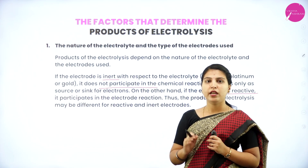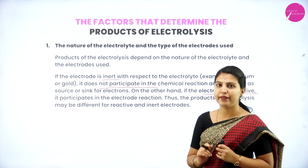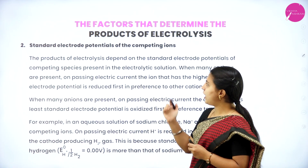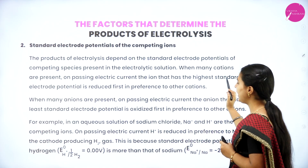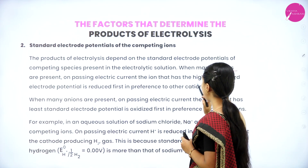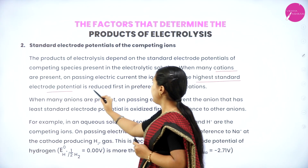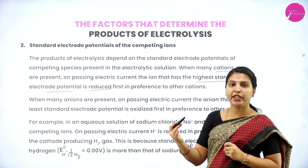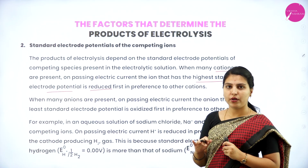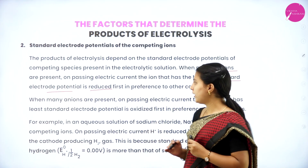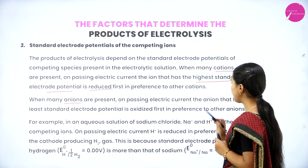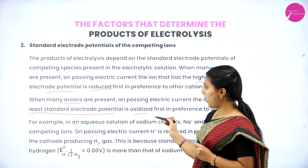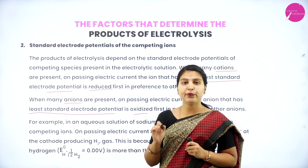Factor 2: Standard electrode potentials of the competing ions. The products of electrolysis depend on the standard electrode potentials. When many cations are present, on passing electric current, the ion with the highest standard electrode potential is reduced first, in preference to the other cations. On the other hand, when many anions are present, the anion with the least electrode potential is oxidized first, in preference to the other anions.